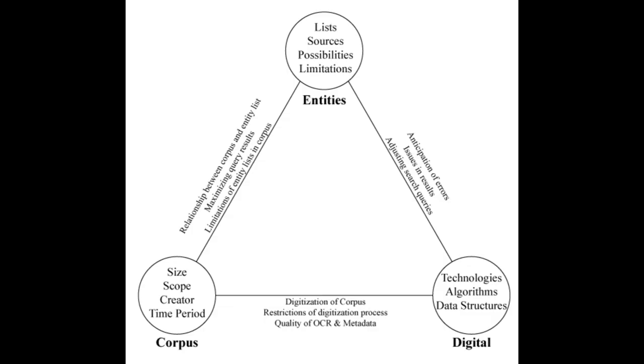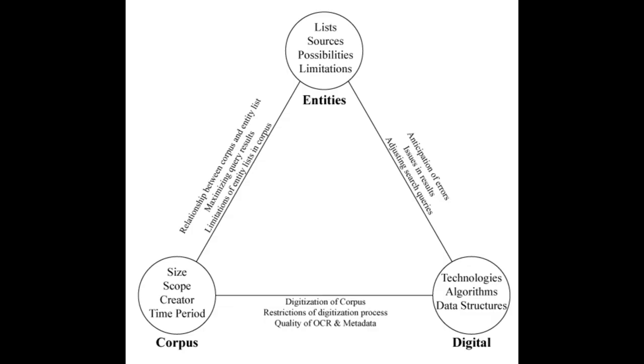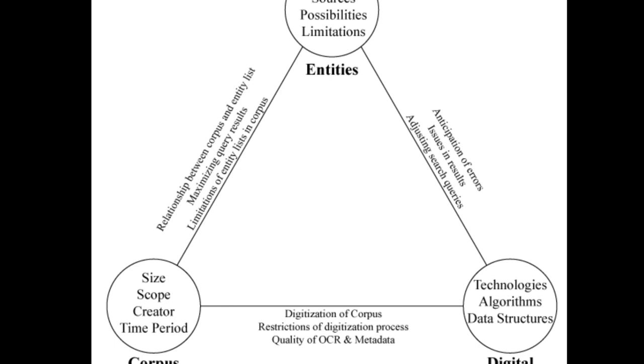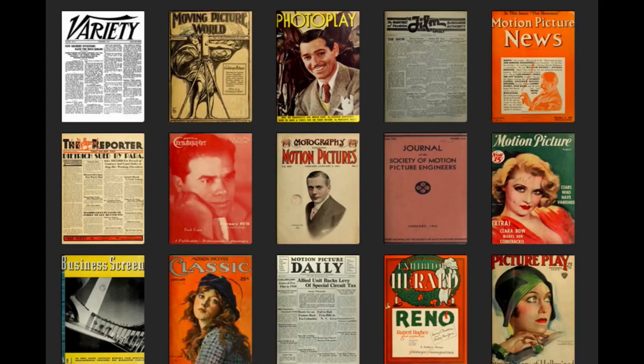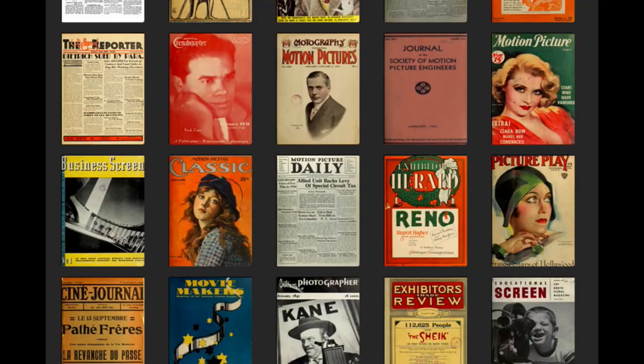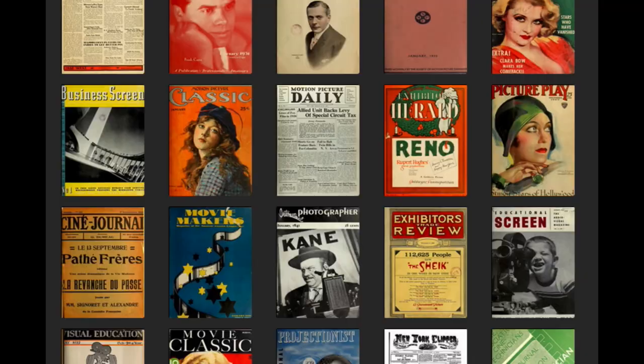In asking these questions about these three elements, we must also understand how they relate to each other. How does the entity list work with the corpus? How does the corpus change when it becomes digital? And how does this process interact with our entity list? For our corpus, the Media History Digital Library, which is focused on periodicals related to 20th century American media, it might be limiting to search with a list of botany terms. However, we shouldn't always see weaknesses as a bad thing, and playing to one's strength can limit our ability to ask new and surprising questions.